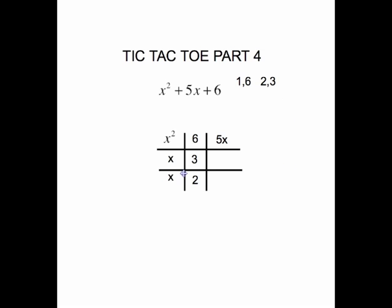So let's check that by multiplying across. x times 3 gives me 3x. x times 2 gives me 2x. And if I add these together, 2x plus 3x gives me 5x. That says I have these in the correct place. I will group them on the diagonal, which gives us x plus 3 times x plus 2 for the factoring.